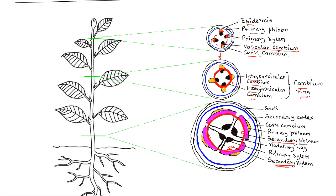The interfascicular cambium also divides to give rise to secondary parenchyma, which appears as medullary rays. The parenchyma cells in the medullary rays allow for lateral movement of water, mineral salts, and nutrients across the stem.